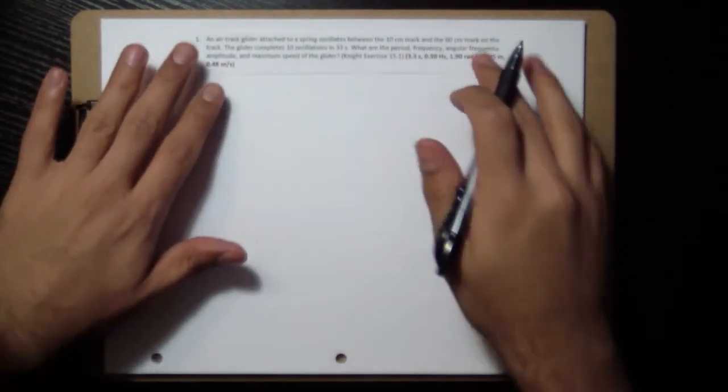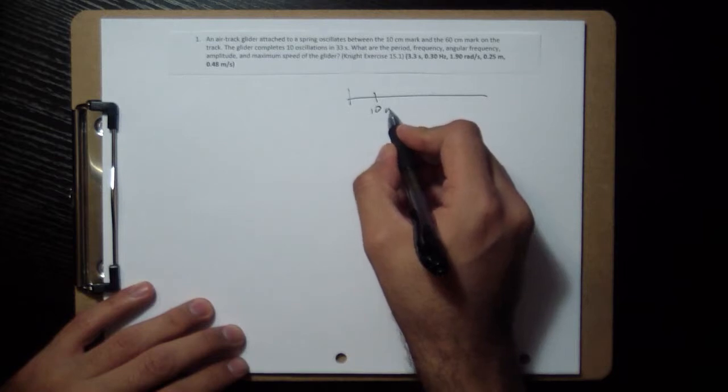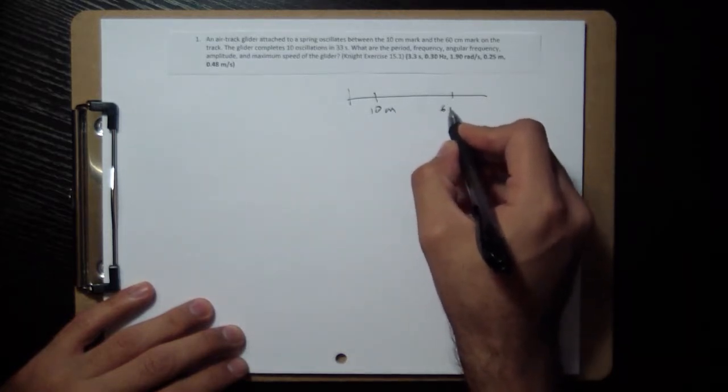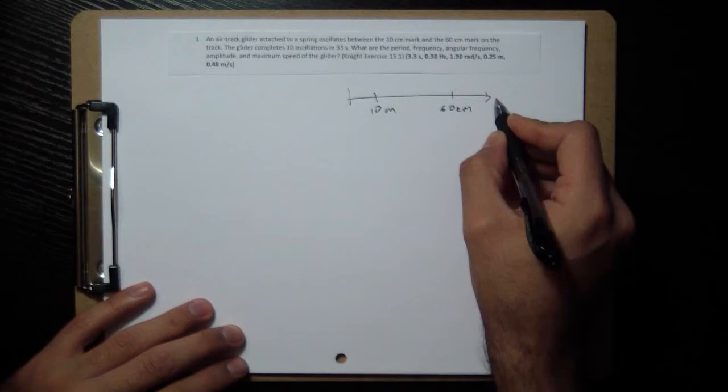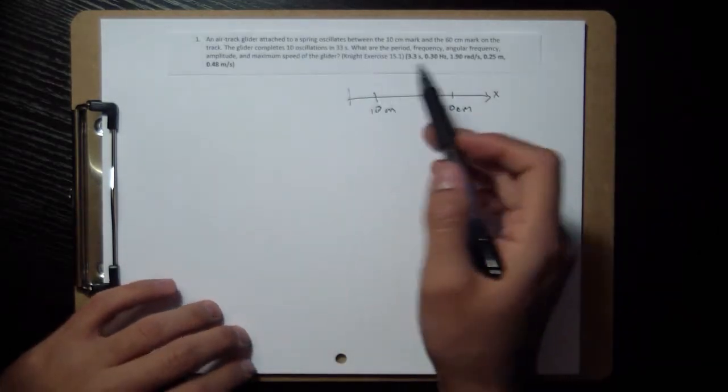One, two, three, four, five things that we have to get. So you have a glider that's going between the 10 centimeter and the 60 centimeter mark. And it completes 10 oscillations in 33 seconds.